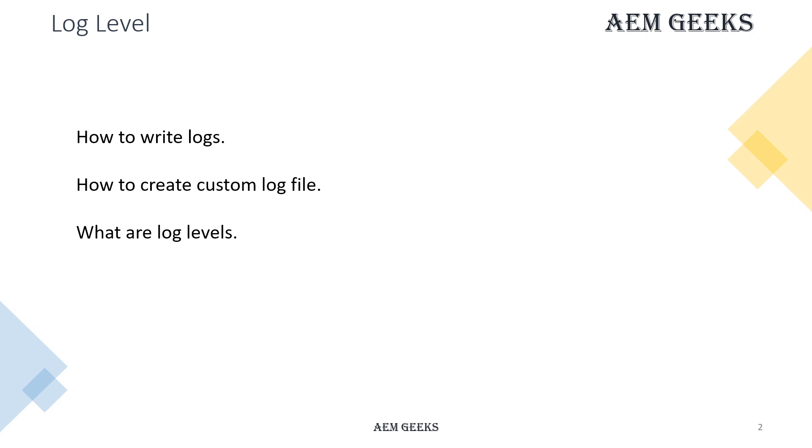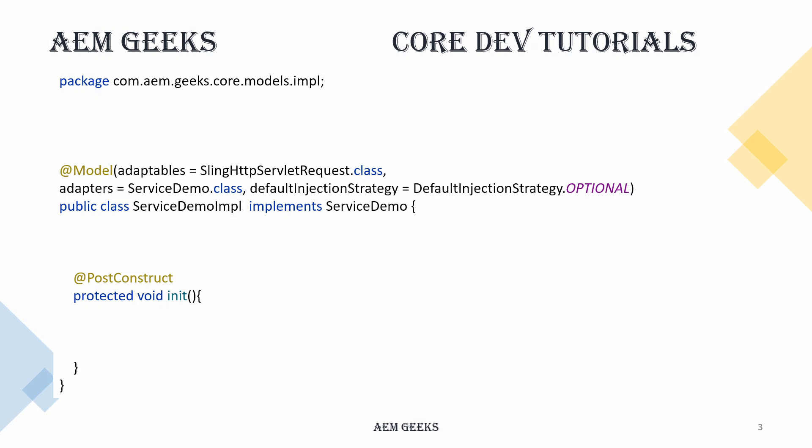There are also interview questions — some direct questions related to this topic as well as some indirect questions. Then we'll see the full demo. So let's understand how to write a log. Suppose I have a simple Sling Model class — this is true for any kind of backend component like a Sling Model, scheduler, event listener, servlet, or even a simple class.